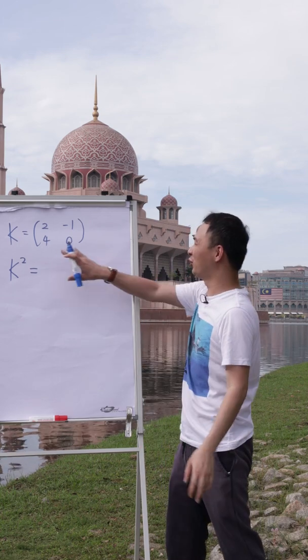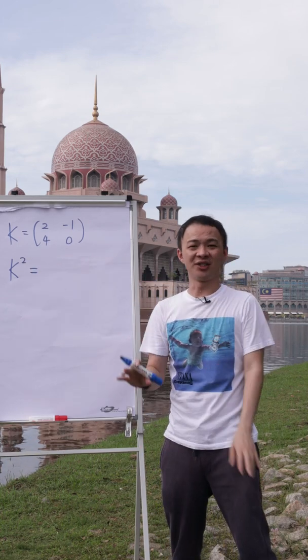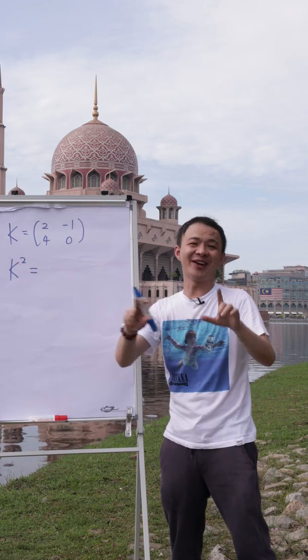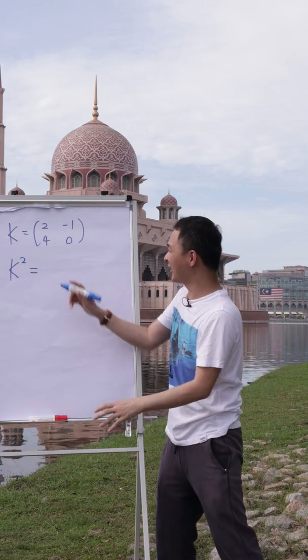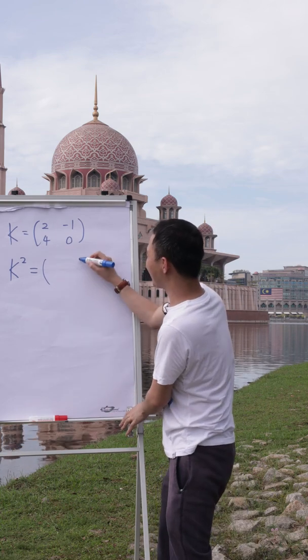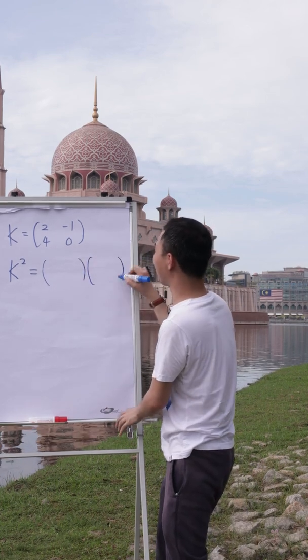Alright, in this video I'm going to teach you how to solve this kind of matrix question. So first thing is, whenever you see K squared, it doesn't mean you want to square the matrix. K squared over here basically means K multiplied by K. So that means this matrix K multiplied by another matrix K.